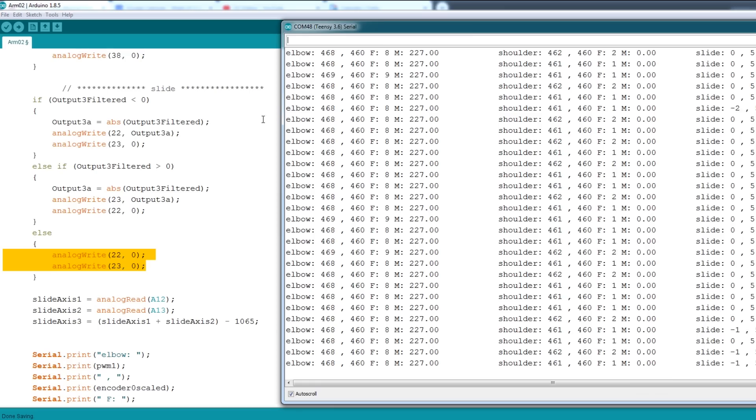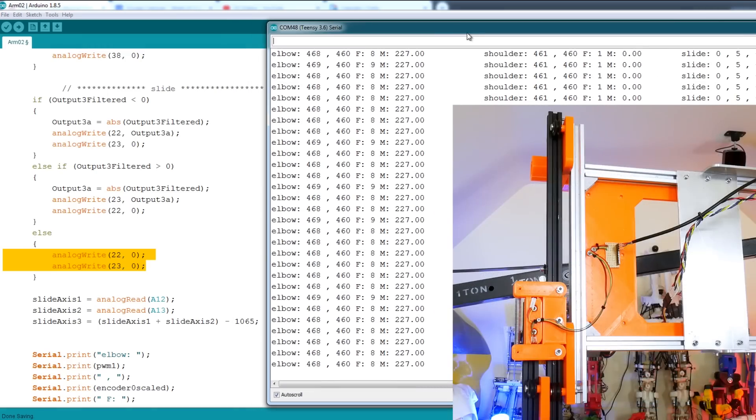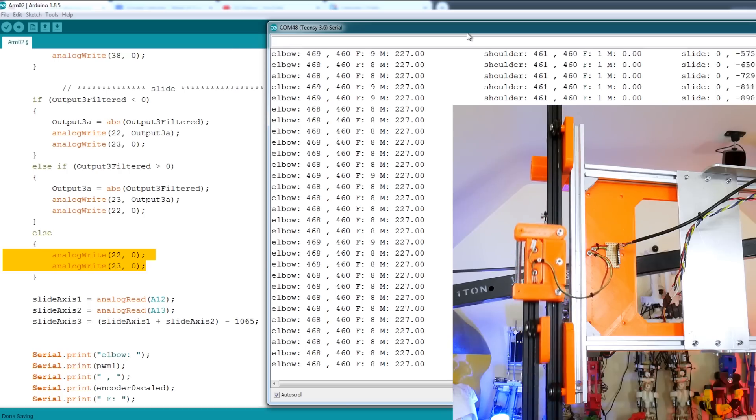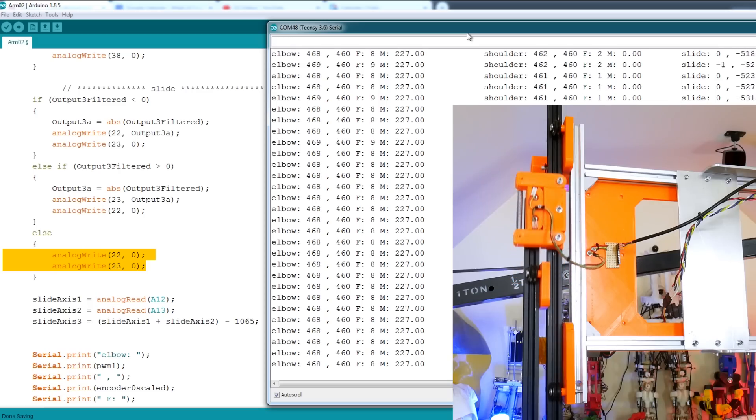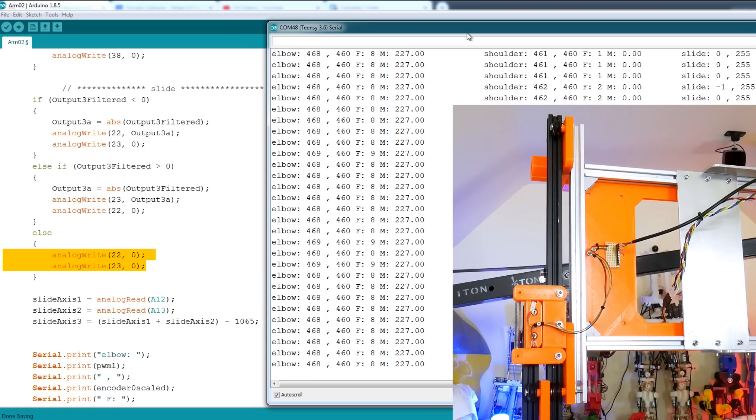If we now open a serial monitor and start putting some values in, let's put in minus 5,000 followed by a character so it knows it's the end of the data. We should find that goes about halfway up. I might run it right to the ends, but if we do 10,000 it should go up again, and obviously if we go back to zero it should go nicely to the bottom again.